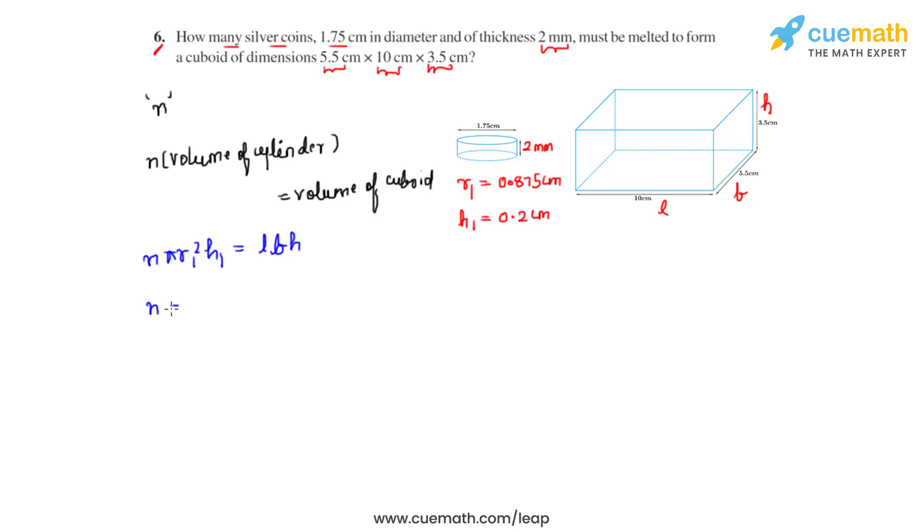Now n will be equal to L times b times h, which is 10 times 5.5 times 3.5, divided by r1 squared, which is 0.875 squared times h1, which is 0.2 times pi, which is 22 by 7. On calculation and simplification, we get the value of n to be equal to 400.